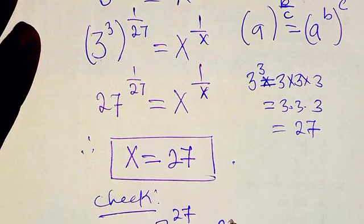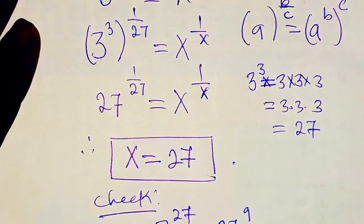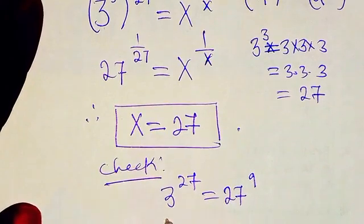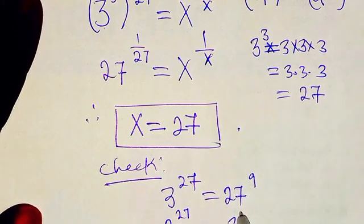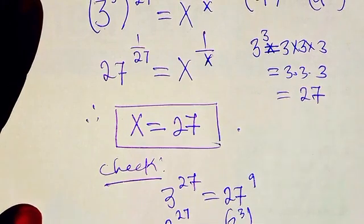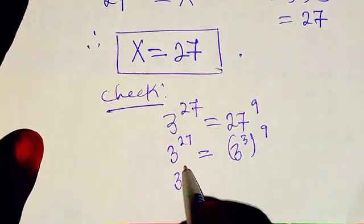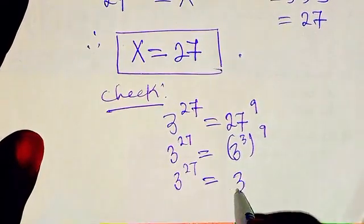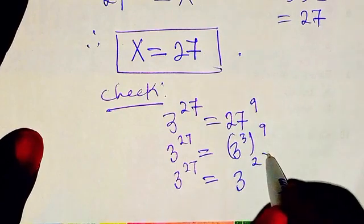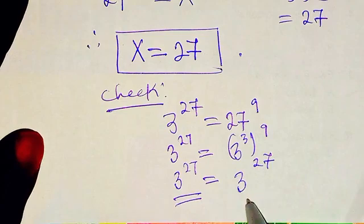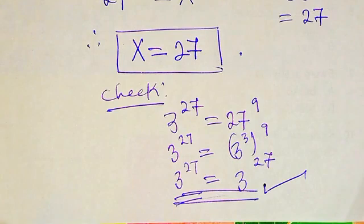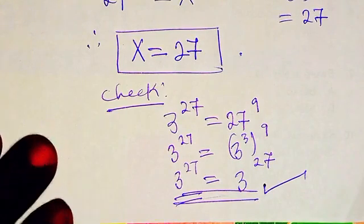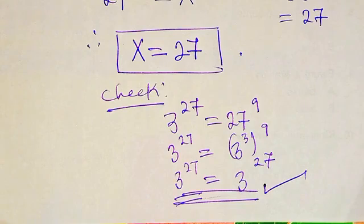To verify: 3 to power 27 equals 27 to power 9. We can write 27 as 3 to power 3, so the right side becomes 3 to power 3, then to power 9, which is 3 to power 27. Both sides equal 3 to power 27, confirming the answer. So x equals 27 is the solution. Thank you, bye.